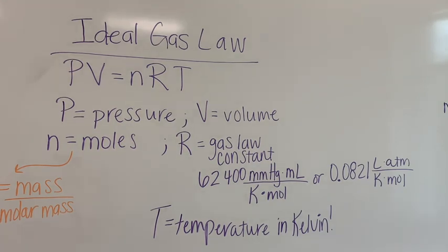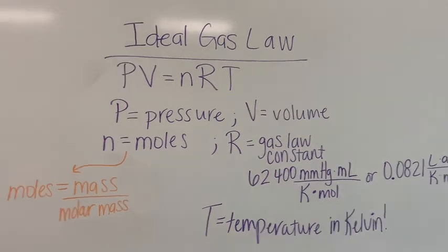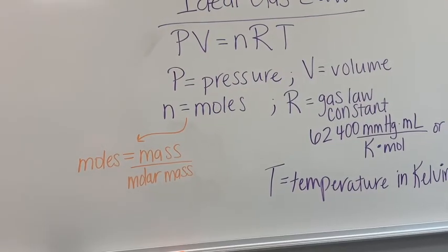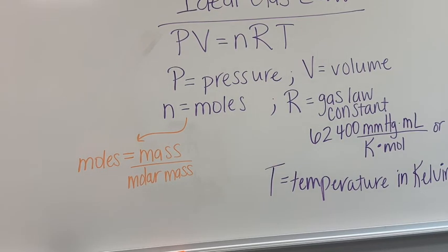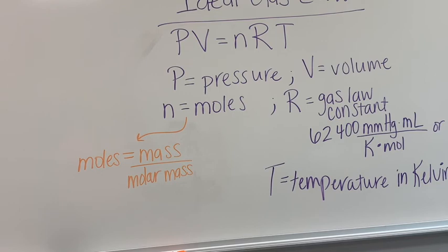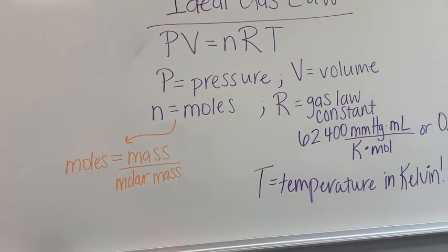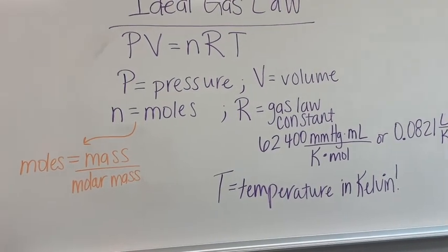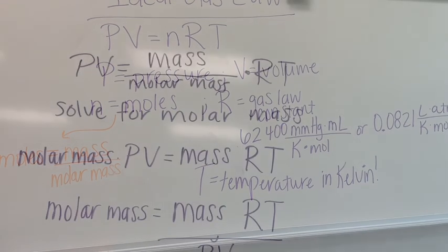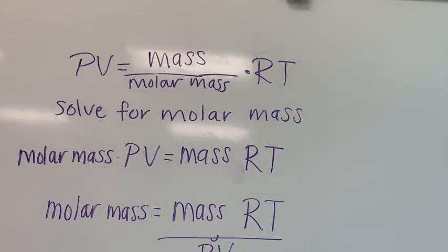Going back to moles — you should remember that generally you're going to calculate moles by using mass divided by molar mass. So I've substituted that in: moles is equal to the mass of whatever it is — in this case the mass of our gas — divided by molar mass. You're going to substitute that in for N in PV equals nRT for the N value, substituting in mass divided by molar mass.